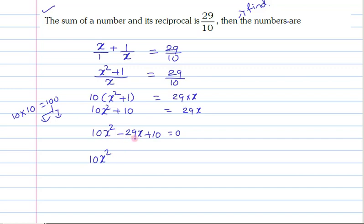So I am going to write this minus 29 as minus 25x minus 4x is equal to 0. If you observe this, minus 25 into minus 4 is plus 100. But by adding these two, you will get minus 29.